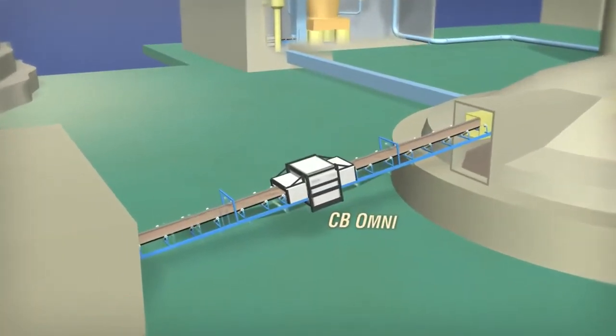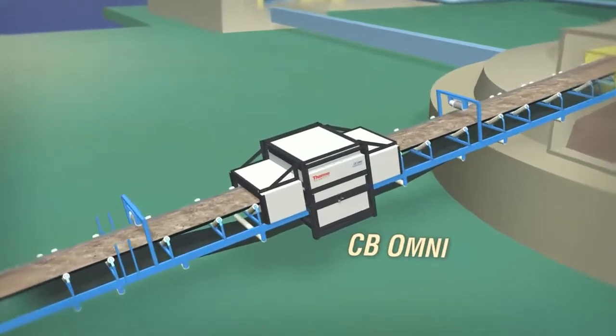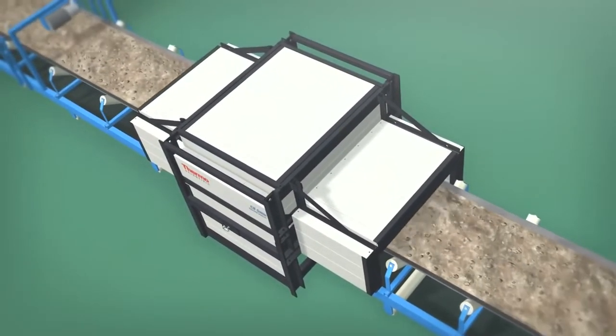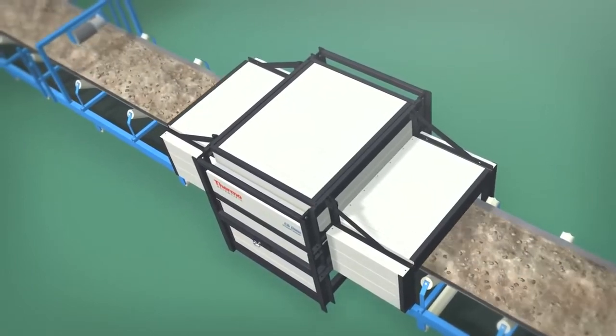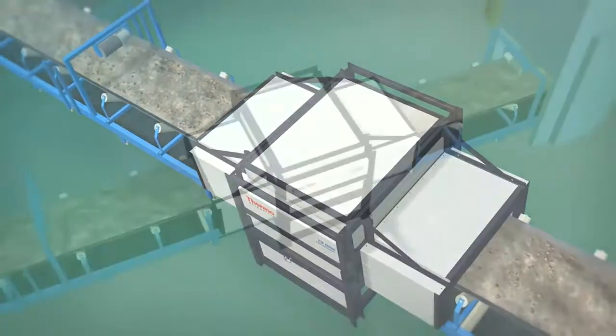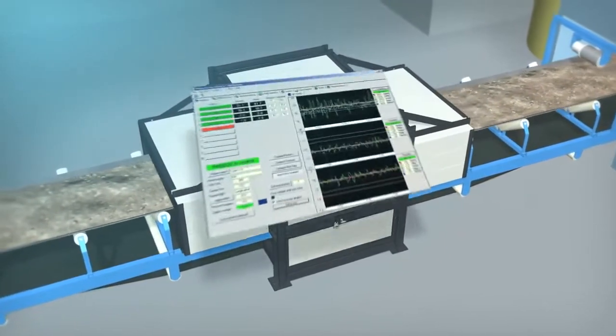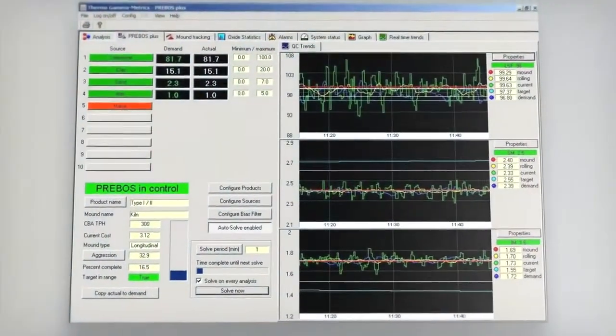Thermo Scientific's CB Omni online elemental analyzer integrates into a conveyor beltline and measures the entire composition of the raw materials traveling on the conveyor. The CB Omni provides material chemistry analysis every minute and this rapid and timely information